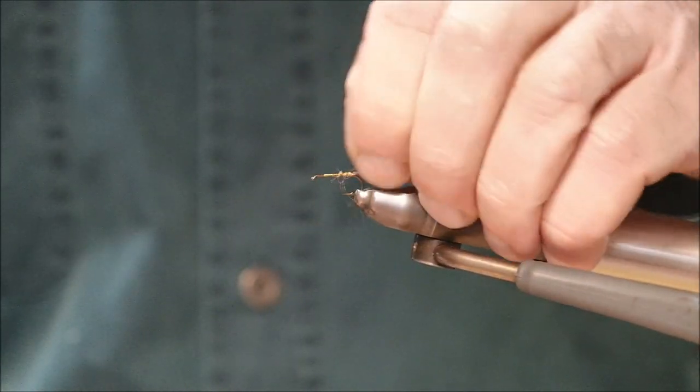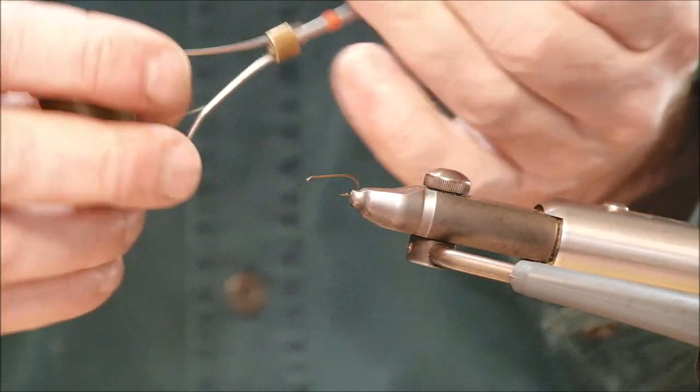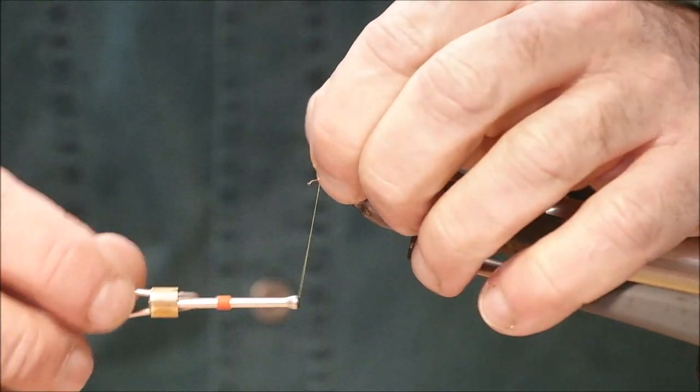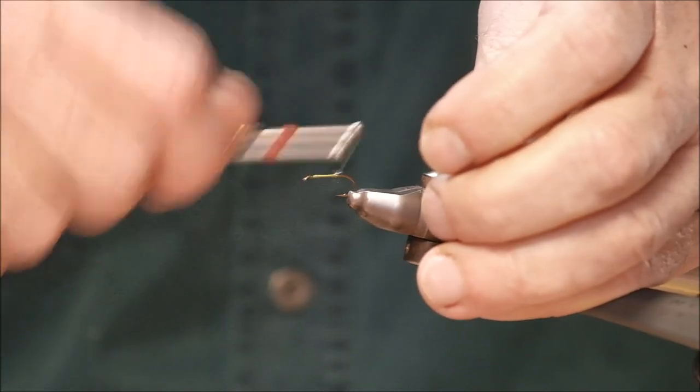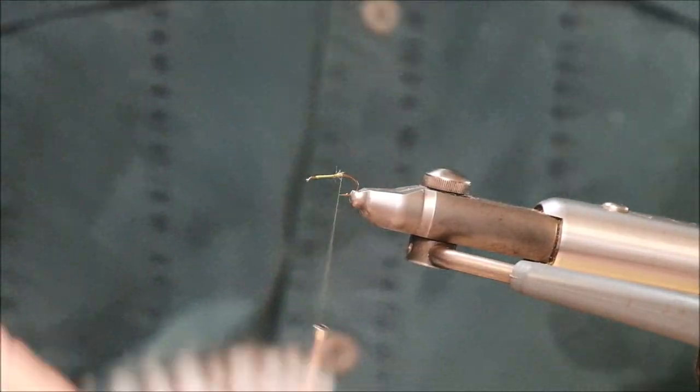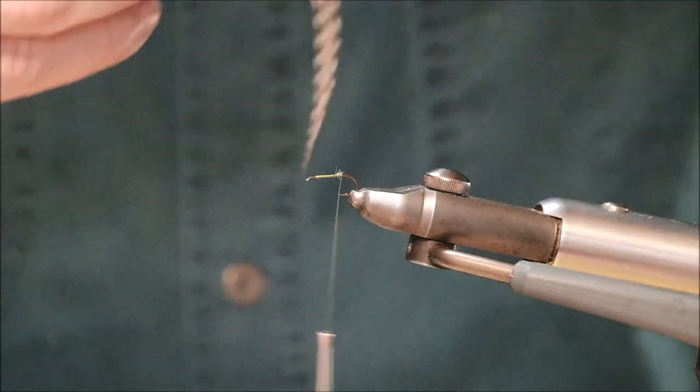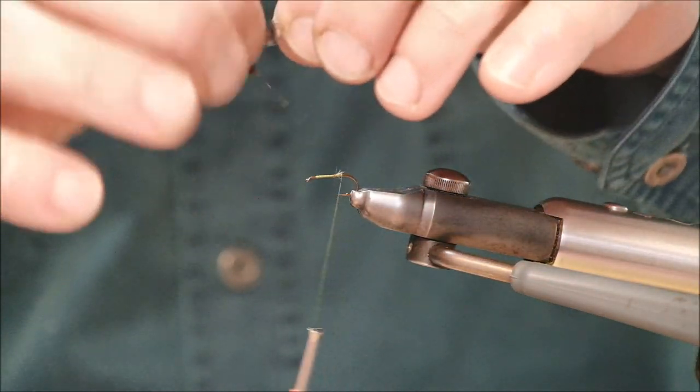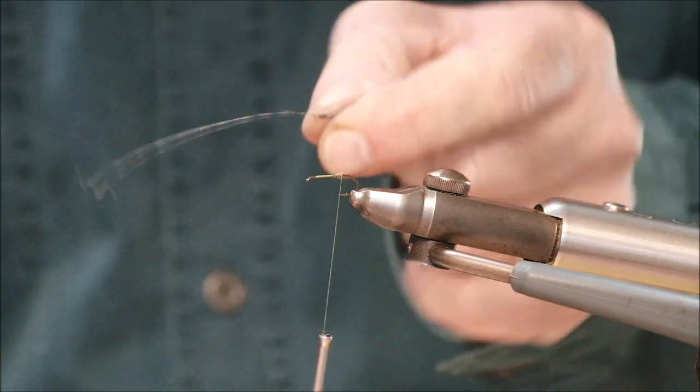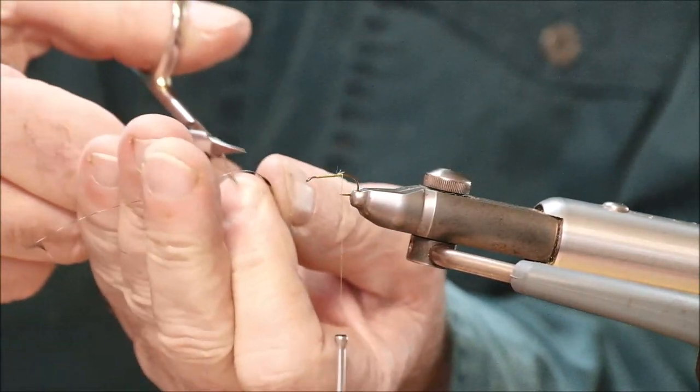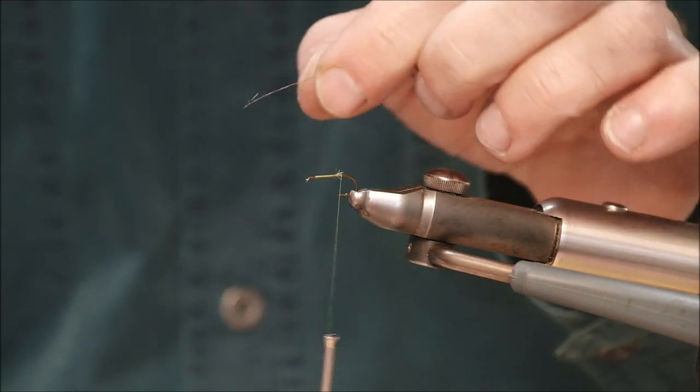Now I'm just using the same tying thread all the time. You can vary that color as well. I'm just going to create a base here. This is basically a grizzled hackle. I've already prepared one. What I've done is I've just taken off the feather fiber. What I'm going to use for the body is the stem of the feather, the center of the feather. It creates a nice ribbed effect. And as well as that, it's a bit more durable than peacock hurl.